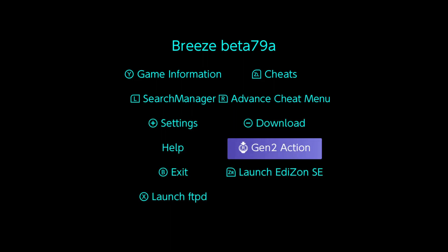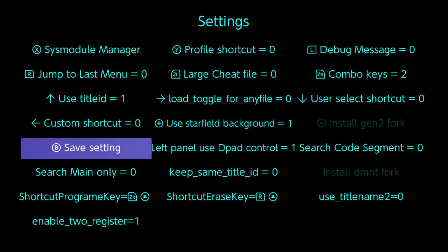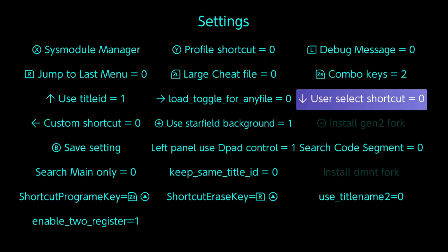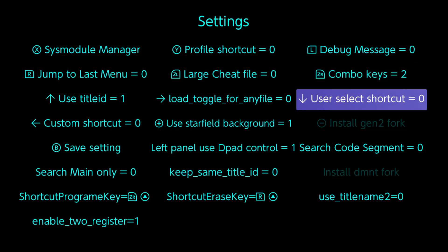Open Breeze and go to Settings. You can set the total number of button combinations to use; the default is 2. So 2 will be used in this tutorial.